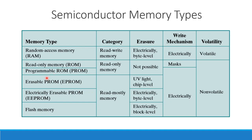The next type is EPROM — Erasable Programmable ROM. It can be erased. The erase mechanism uses ultraviolet light at the chip level.